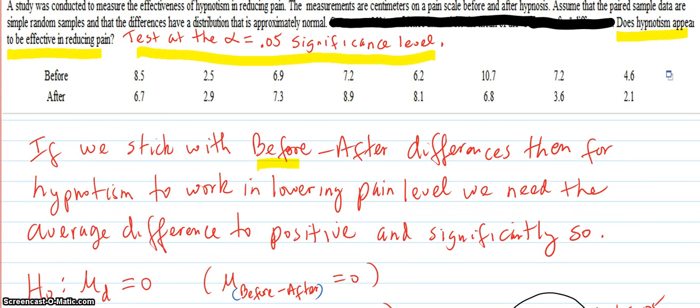So if we stick with the before minus after differences, then for hypnotism to work in lowering pain, in other words to be effective, we need the average difference to be positive. We need the before to be greater than the after. In other words, we wanted the after to drop and be lower than the before so you get positive differences. And we need it to be significantly so.